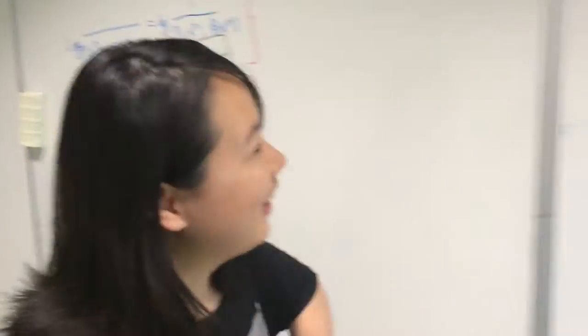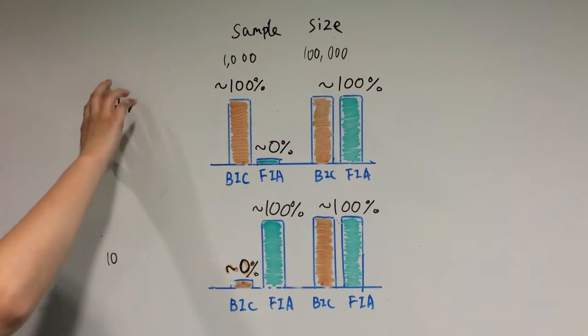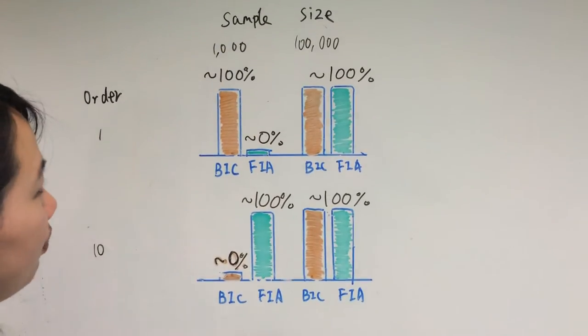Let's take a look at model selection for Markov chain case. We select between order 1 and order 10 Markov chain model.